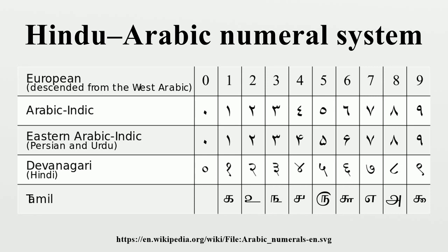Etymology: The Hindu-Arabic numerals were invented by mathematicians in India, and were originally called Hindu numerals. They were later called Arabic numerals by Europeans, because they were introduced in the West by Arab merchants.